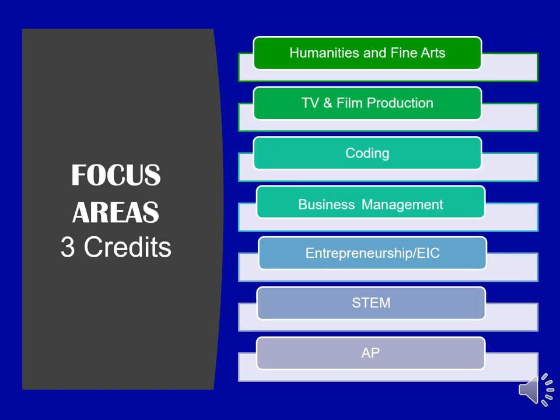All students must satisfy three credits in a specific focus area. Focus areas are unique to each high school in Williamson County and Brentwood High School offers seven: Humanities and Fine Arts, TV and Film Production, Coding, Business Management, Entrepreneurship, STEM, and AP. If your uScience results show a propensity for marketing or being an entrepreneur, you likely received a letter from our central office inviting you to explore the Entrepreneurship and Innovation Center, or EIC. If this is of interest to you, we can discuss this unique opportunity in more detail when we meet.